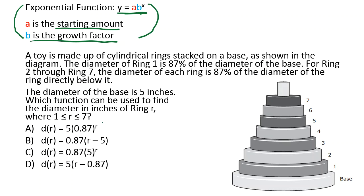And that says which function can we use from 1 to 7. This is a little bit weird. It doesn't look at all like the previous problem. Well, maybe we can find a starting amount. It says the diameter of ring 1, that kind of sounds like the starting amount, is 87% of the diameter of the base. Oh, that's a bit tricky. Ring 1 isn't the start. The base is the lowest amount. If we look at the picture, you notice that base is the lowest amount. That's probably our starting amount. Let's see if we can find the base anywhere. It says the base is 5 inches. I'm going to assume A is equal to 5.